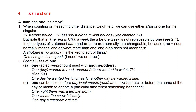Special uses of ONE include ONE preceding an adjective or pronoun used with 'another' or 'others'. For example: one boy wanted to read, another wanted to watch TV; one day he wanted his lunch early, another day he wanted it late. ONE can also be used before a day, week, month, year, or season, or before the name of a day or month to denote a particular time something happened — for example, one night there was a terrible storm; one winter the snow fell early; one day a telegram arrived.